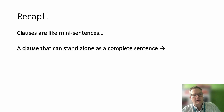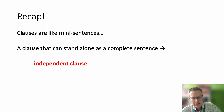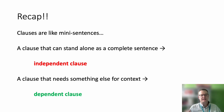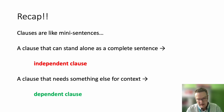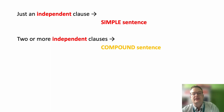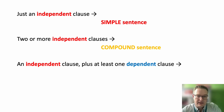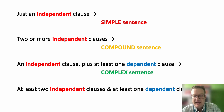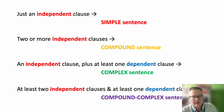Let's quickly recap all that. A clause is like a mini-sentence. A clause that can stand alone as a complete sentence on its own is an independent clause. But a clause that needs something else for context is a dependent clause. It needs a subject and it needs a predicate, and the predicate has to have a finite verb there somewhere. So, if a sentence is just an independent clause, that's a simple sentence. If it's two or more independent clauses, that's a compound sentence. If it's an independent clause plus at least one dependent clause, we've got a complex sentence. And if it's at least two independent clauses and at least one dependent, it's both compound and complex — compound because you've got multiple independents, complex because you've got a dependent there.